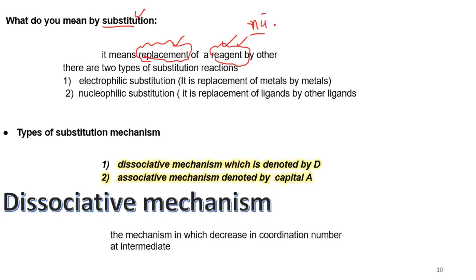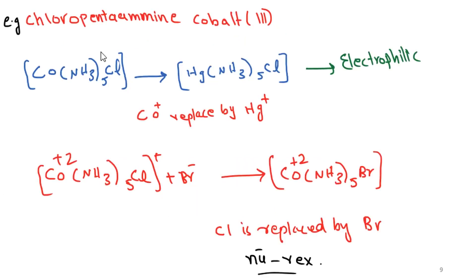There are two types of substitution reactions. First, electrophilic substitution reactions, in which the replacement of one metal by another metal in the complex takes place. For example, in this example, cobalt metal is replaced by a mercury metal, so this is an electrophilic substitution reaction.